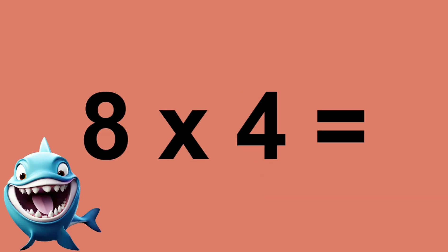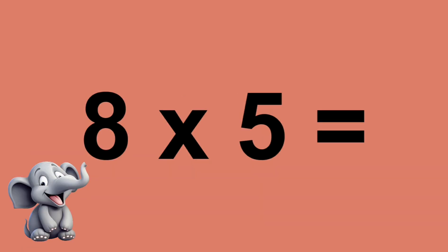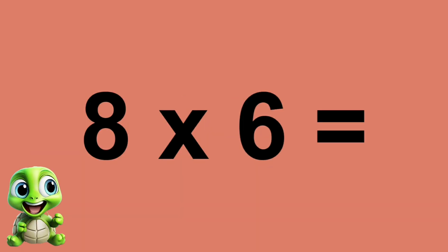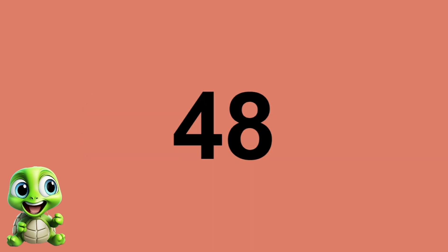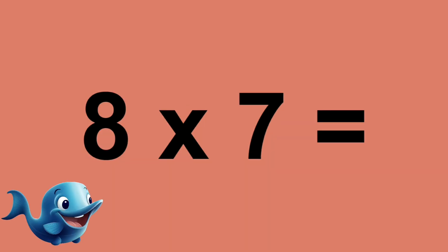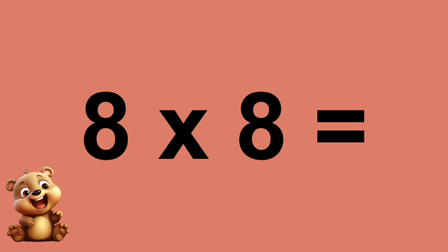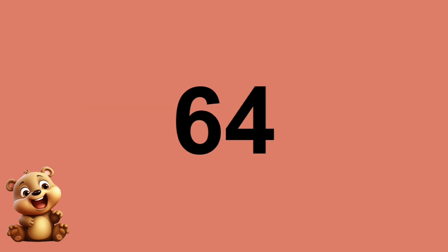Eight times four equals thirty-two. Eight times five equals forty. Eight times six equals forty-eight. Eight times seven equals fifty-six. Eight times eight equals sixty-four.